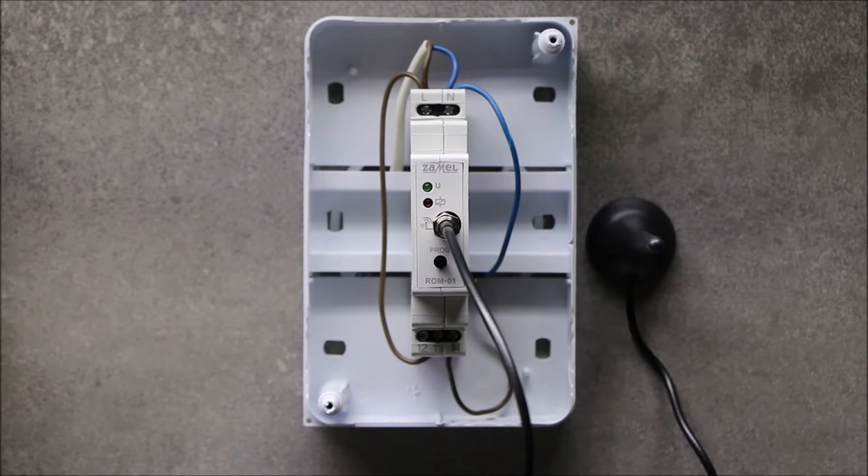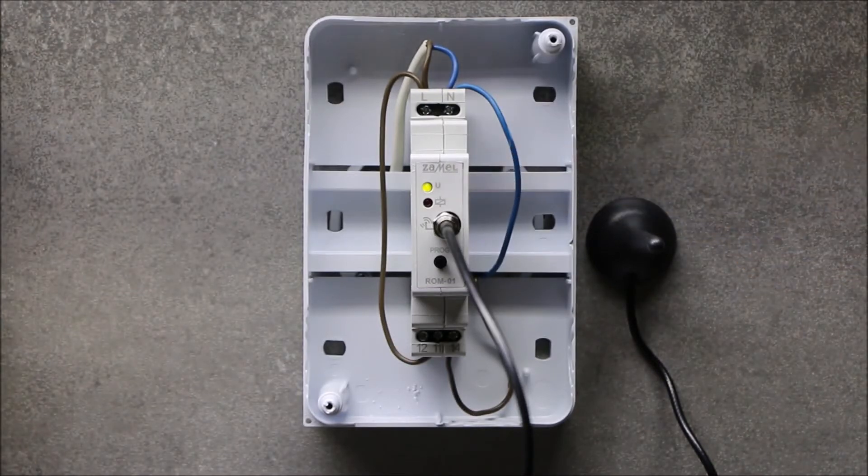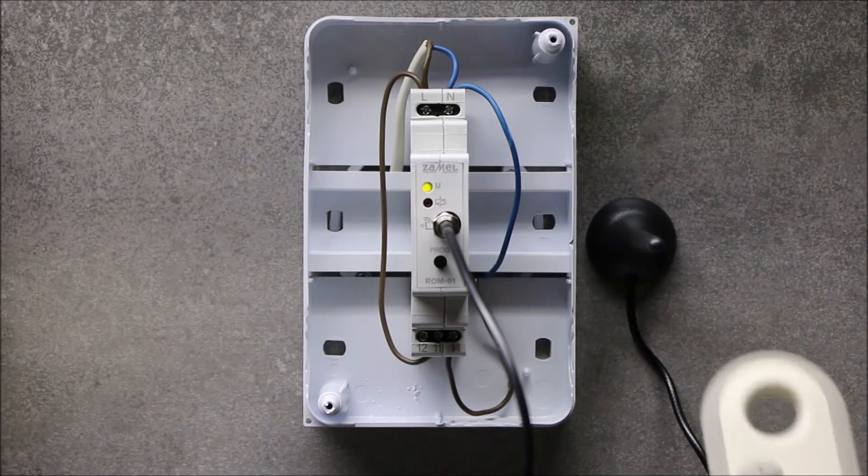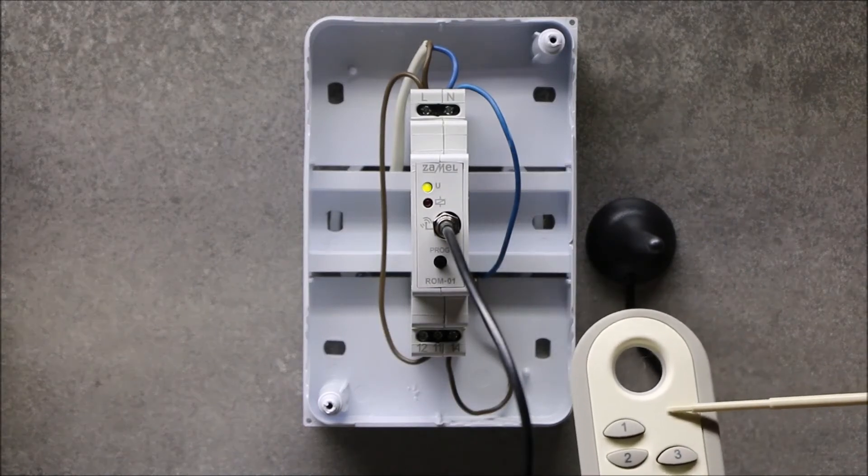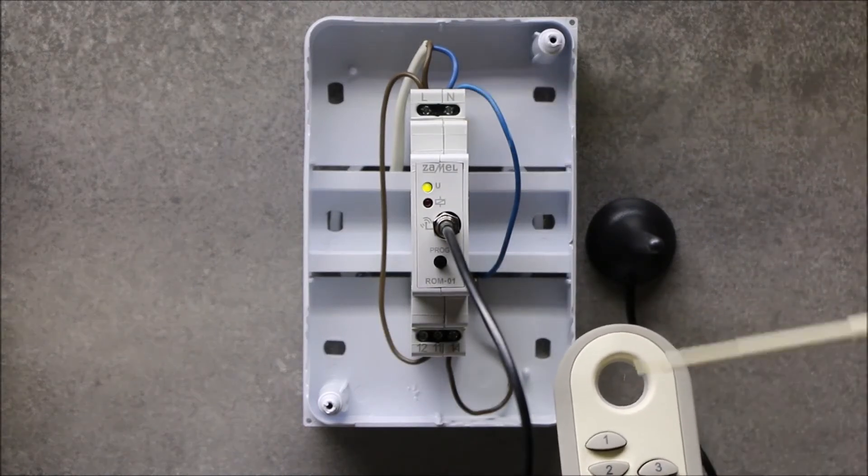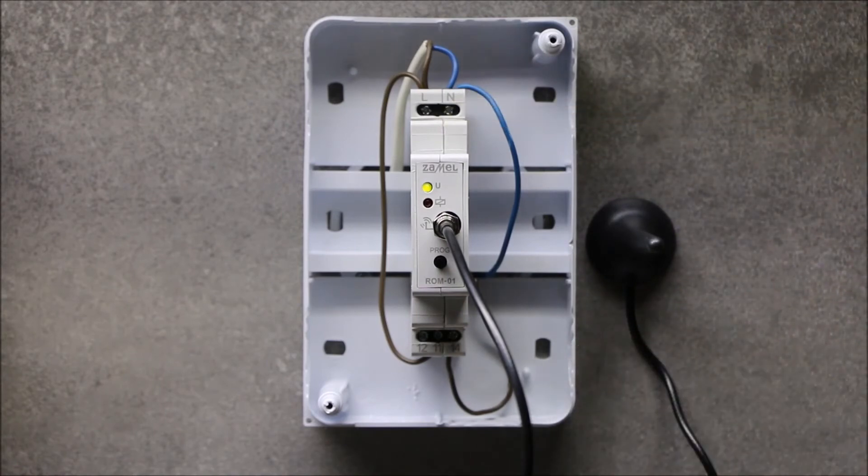After connecting the cables and placing the receiver on DIN rail inside the installation box, power up the device and begin the programming procedure. Device programming is the operation of pairing single or several transmitters into the receiver of the ExtraFree system. It can be done in four different methods, which determines the receiver operation mode.